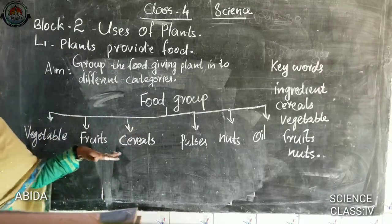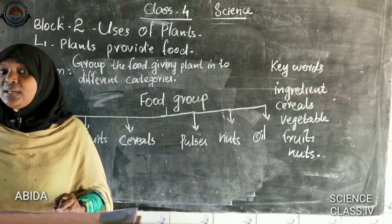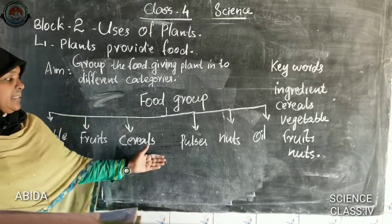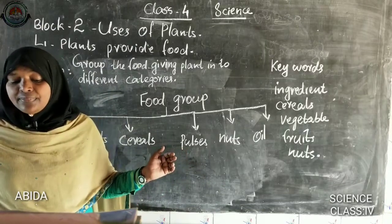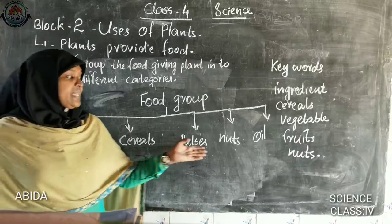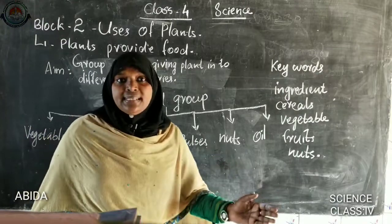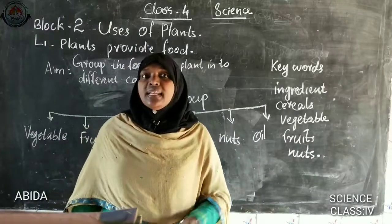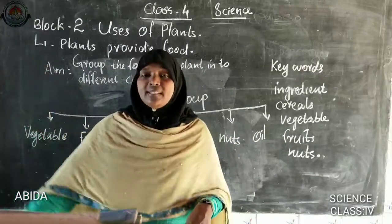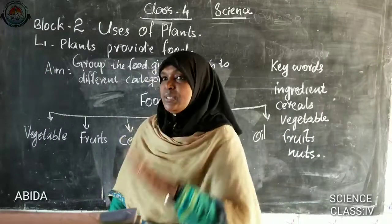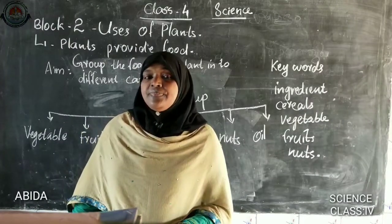Then cereals: rice, wheat, oats, maize, etc. Then pulses — what are pulses? Beans, peas, green gram, etc. Next, nuts: cashew nuts, badam, pistachios — these are nuts. Then oil seeds can be gotten from plants, but they are not directly used as food. They are taken into factories and converted into oils for use. Examples are coconut, mustard, sesame, etc.